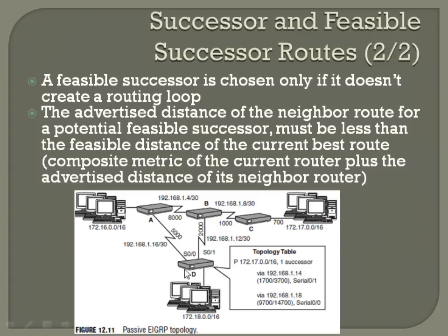That's the difference between your advertised distance (the first value) and your feasible distance (the second value). A feasible successor is chosen only if it doesn't create a routing loop. Here's where the language gets a little scary — you have to know what each of these things are. The advertised distance of the neighbor route for a potential feasible successor must be less than the feasible distance of the current best route.